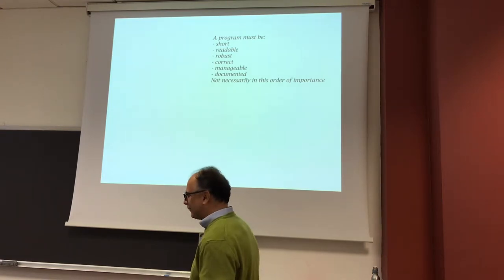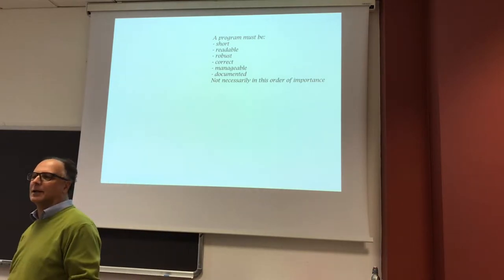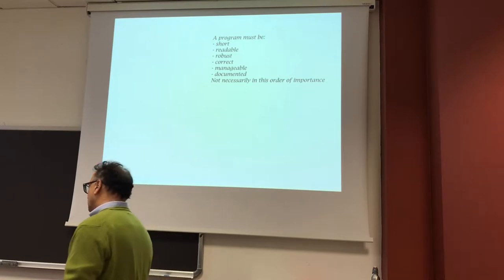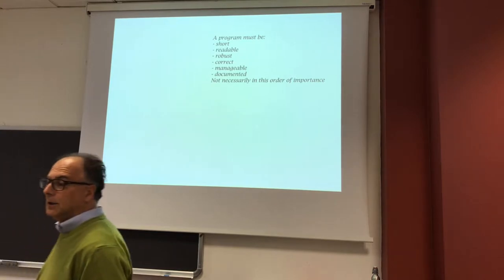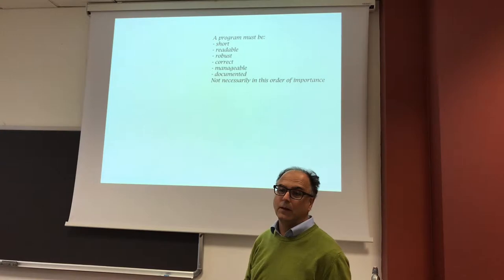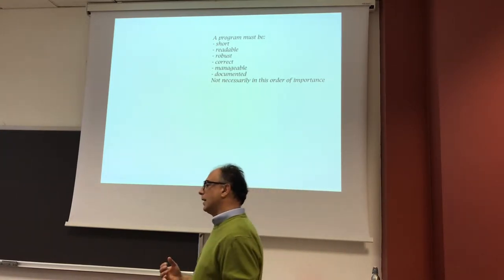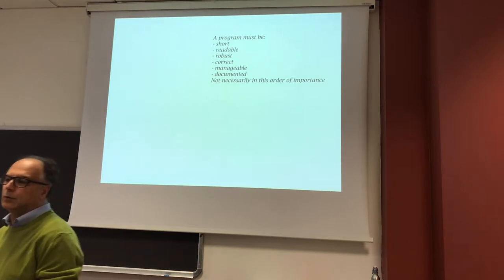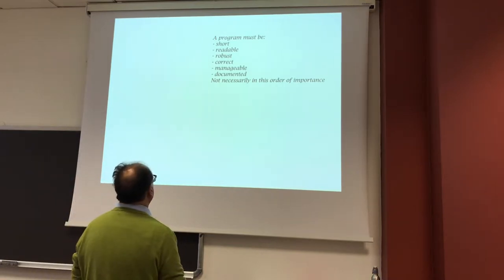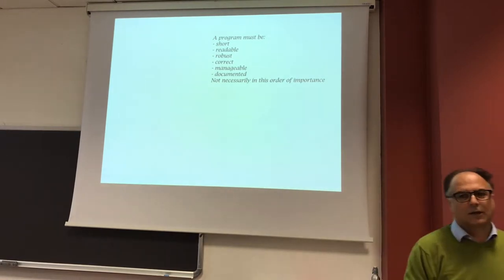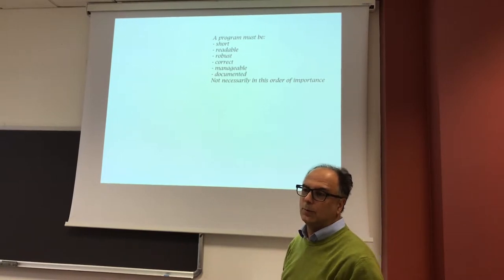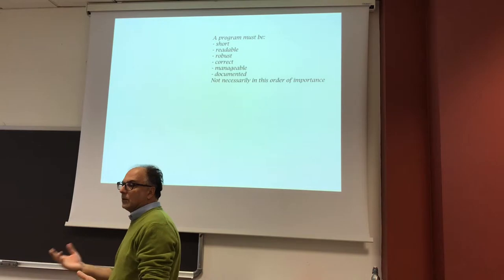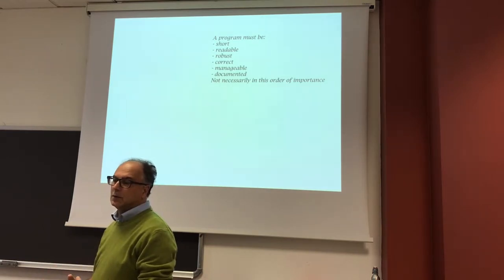The program must be obviously correct — meaning it works fine — but correct from two points of view: the informatics side and, for us, the physics side. These two things don't always coincide. It should also be manageable: short, useful in other ways, and eventually improvable. A program that doesn't have these characteristics is not transmittable. If you want to do open science, your programs must have all these characteristics, including being documented. The best documentation is to write clean code.